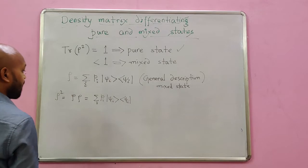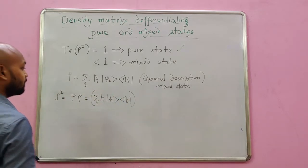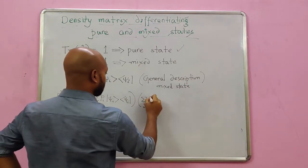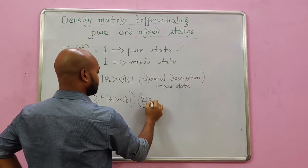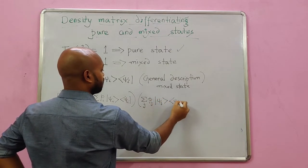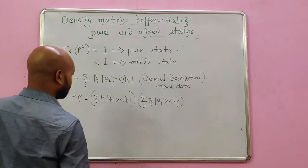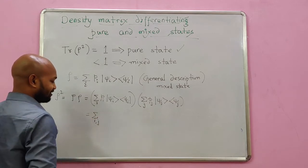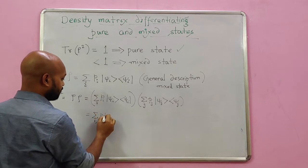But then this time, let's change the index. It doesn't matter even if you do not change the index, but just to be a bit more rigorous, let's change the index. So this is one rho, this is another rho. And then I have, I could write it as a single summation over i and j, p i, p j.